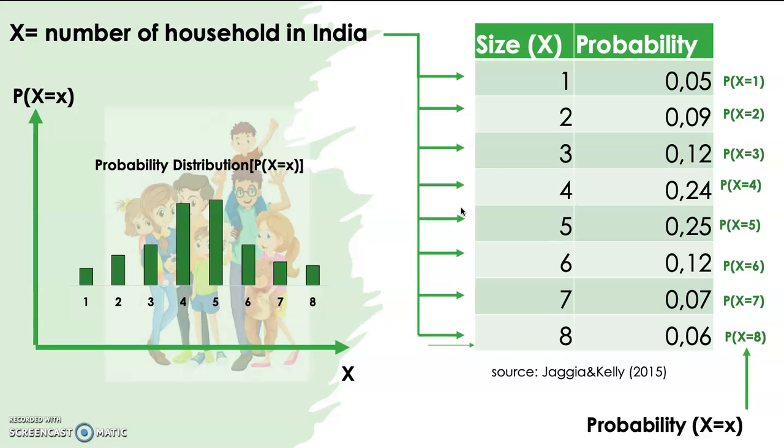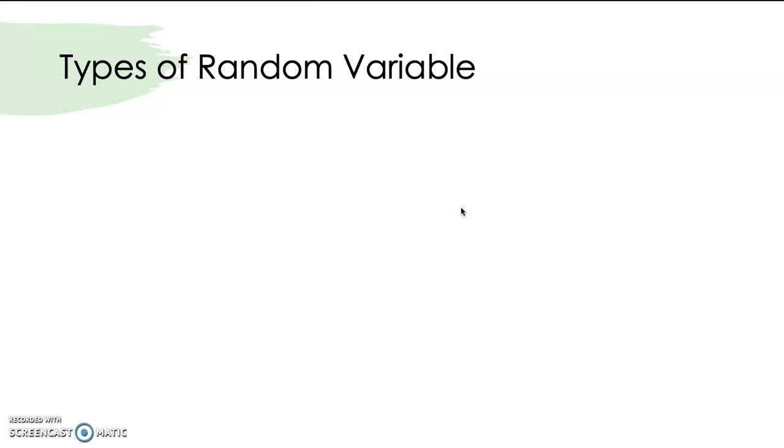Before we finish our discussion of random variable, I would like to explain the types of random variable. So, we can divide the types of random variable into two categories. The first one is discrete random variable.